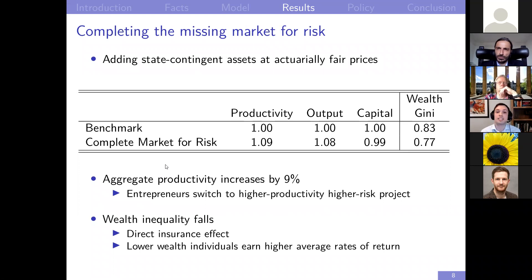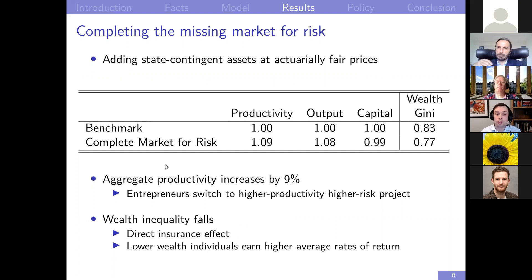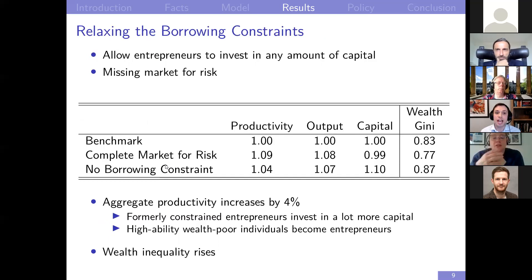The main quantitative exercise is to complete the missing market for risk by adding state-contingent assets at actuarially fair prices. When I do this, aggregate productivity increases by 9% as entrepreneurs switch to higher-risk, higher-expected-productivity projects. Wealth inequality also falls, both from a direct insurance effect and because lower-wealth individuals are now willing to start these higher-risk, higher-expected-productivity projects, earning higher rates of return on average than in the benchmark economy. To contrast with the more commonly done exercise in the literature, I then relax the borrowing constraints and allow individuals to invest any amount of capital while keeping the market for risk missing.